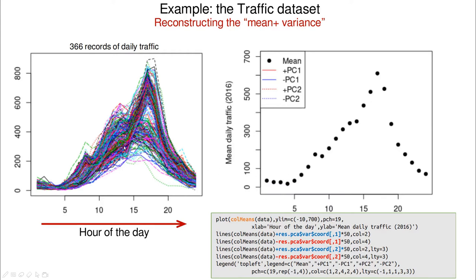The mean value captures pretty well the idea of a peak around six or seven p.m., with low traffic early in the morning and late at night. Now I'm subtracting and adding the first principal component to the mean — multiplied by 50, not because 50 is a special number, but to match the scale since the average value is around 500 and the square root of 500 times two is roughly 50. When you look at the mean, the red line (mean plus PC1) and the blue line (mean minus PC1), you can see the interpretation of the first principal component.